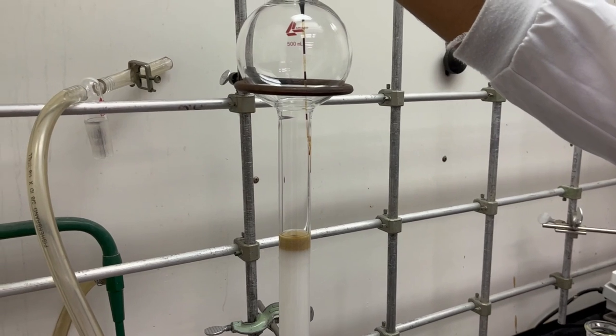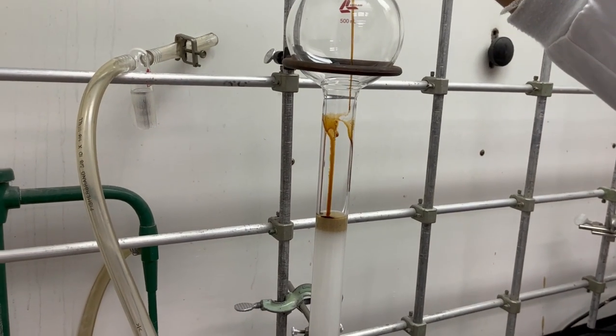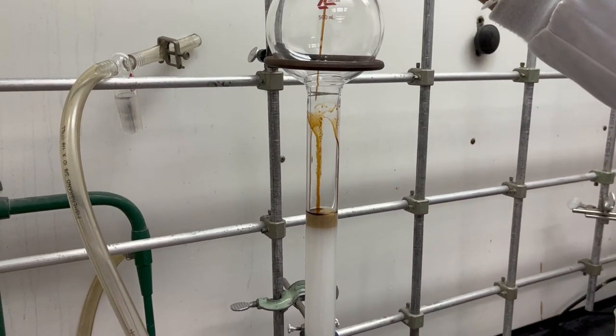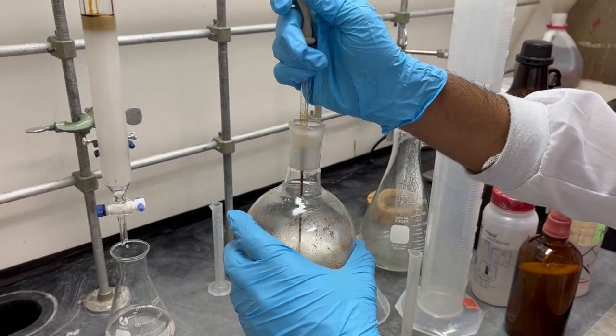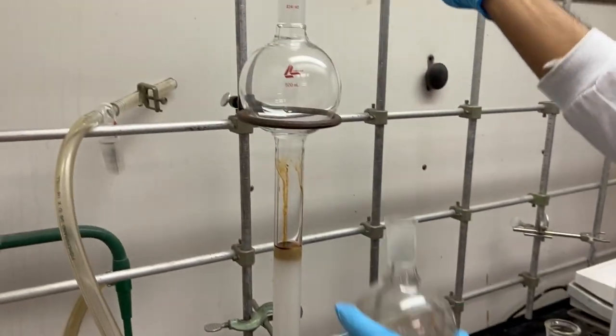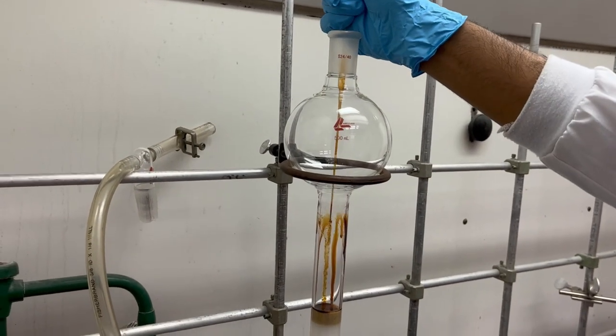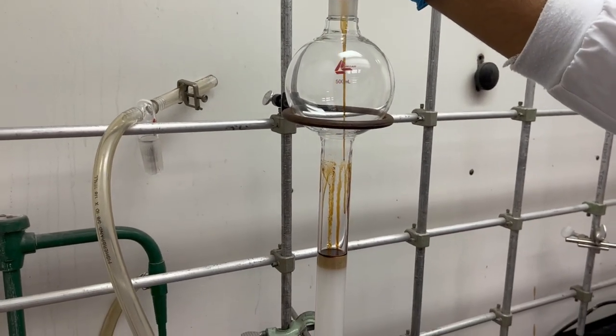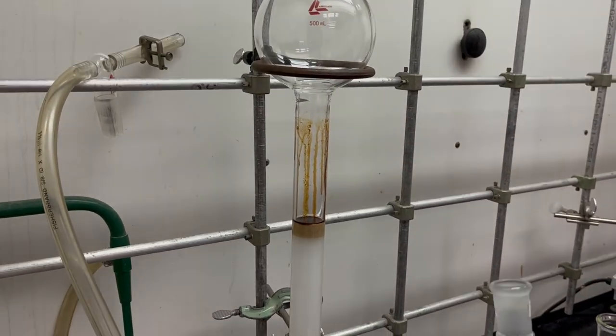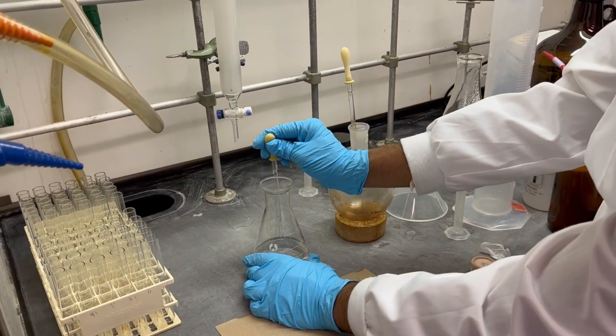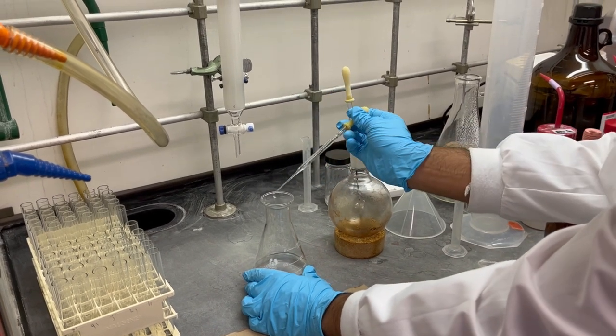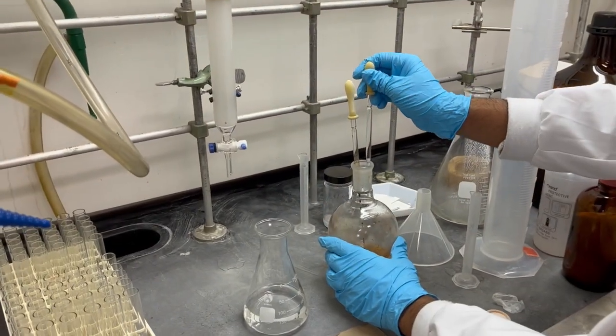Then, the mixture is loaded into the column with the help of a long pasteur pipette. The mixture should be as concentrated as possible while still dropping easily out of the pipette onto the sand layer. It is added in circular motions along the column walls for even distribution. The round bottom flask containing the mixture is then cleaned with small amounts of solvent to minimize losses during transfer.